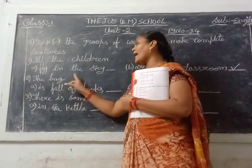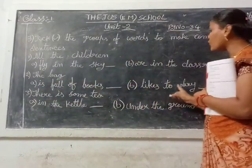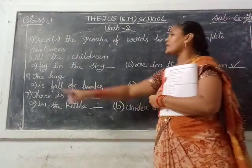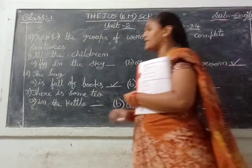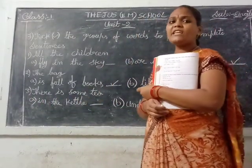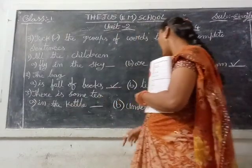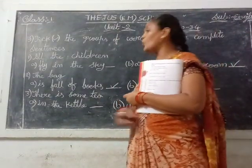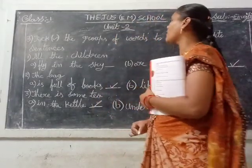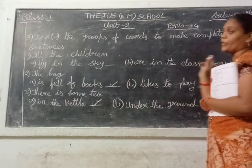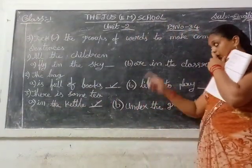See the second one: 'The bag.' A option: the bag is full of books. B option: the bag likes to play — the bag likes to play, children? No. So the bag is full of books — that is the correct sentence. A option is the correct. Next, third one: 'There is some tea.' A option: in the kettle. B option: under the ground — the tea is under the ground? No. There is some tea in the kettle. Kettle means tea can. So A option is the correct.